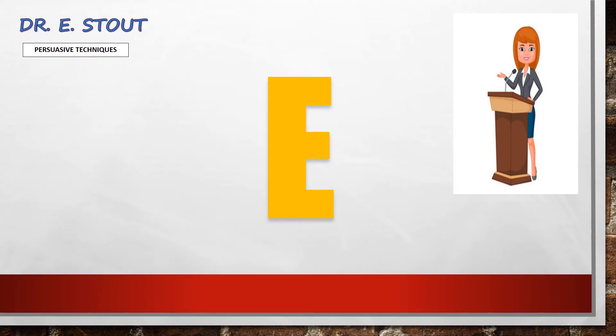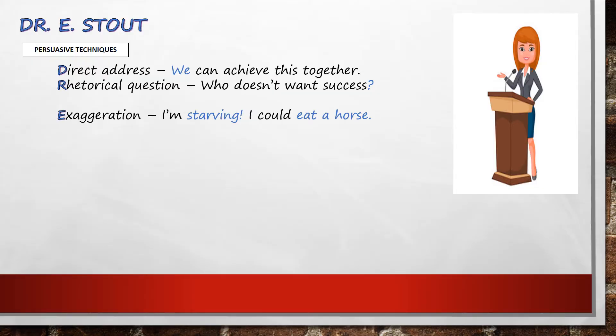The E stands for exaggeration. Exaggeration means making what you're saying really over the top. We do this to sound more passionate, more emotive — as though what you're saying is so important that it's ridiculous if they don't agree with you. The example we've got here is: 'I'm starving. I could eat a horse.' Using the topic that you've chosen, see if you can write a line of exaggeration. Just pause the video while you do.